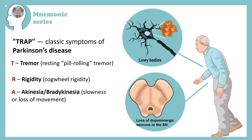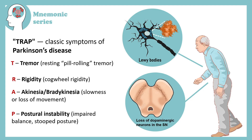A stands for akinesia or bradykinesia, that means slowness or loss of movements. And the last P stands for postural instability, that means impaired balance, stooped posture, and sometimes improper gait that affects normal movement.